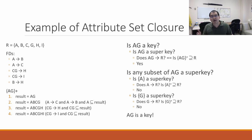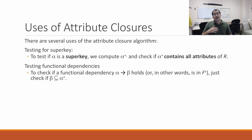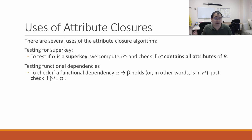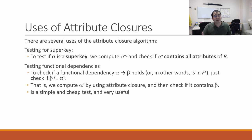There are many ways to use attribute set closures. The first is testing for super keys: compute the closure of alpha and check if it contains all attributes of R. Another useful application is testing functional dependencies — to check if alpha→beta holds, compute the attribute closure of alpha and check if it contains beta. If it does, then beta is functionally determined by alpha. This is an easy way to check if a functional dependency is in the closure of F.